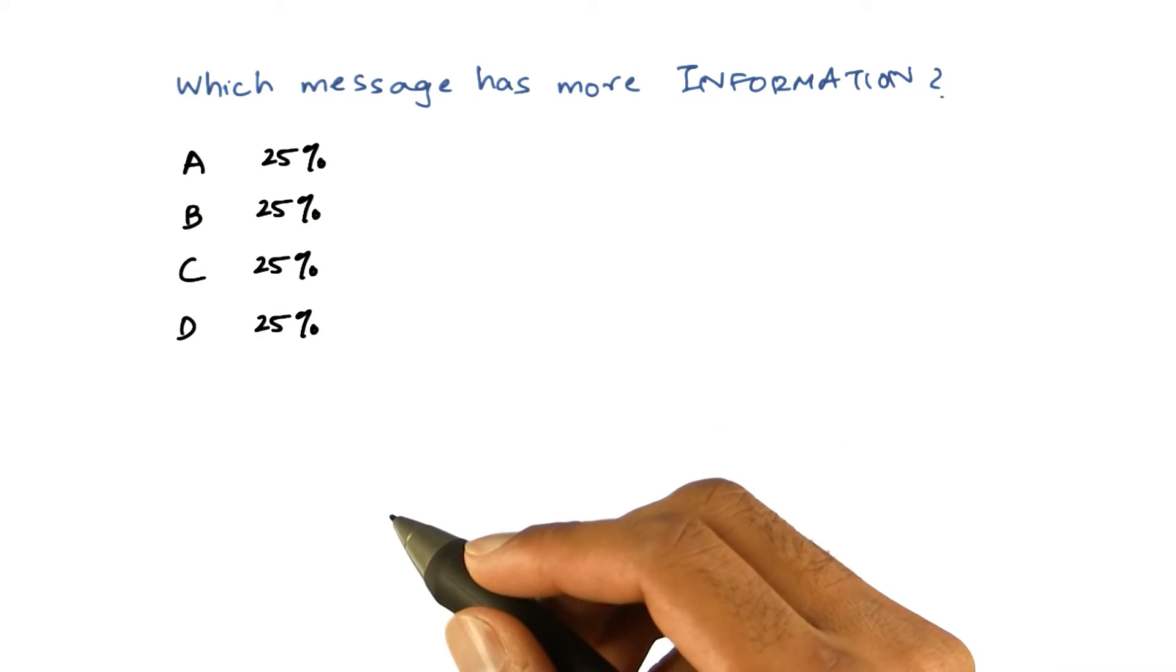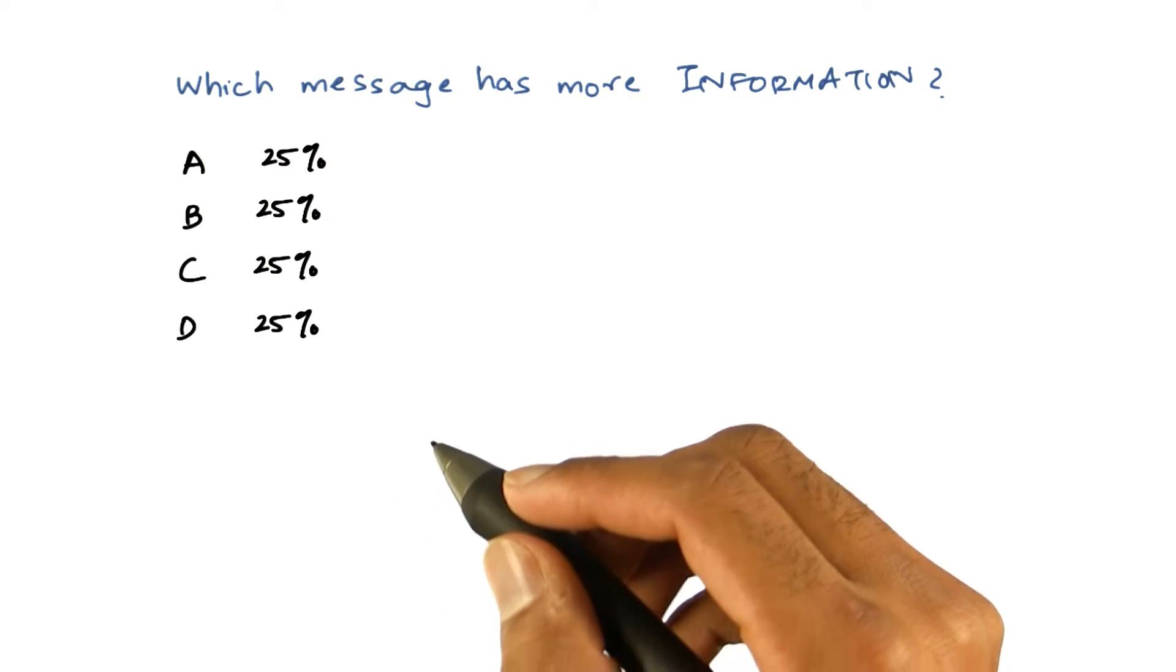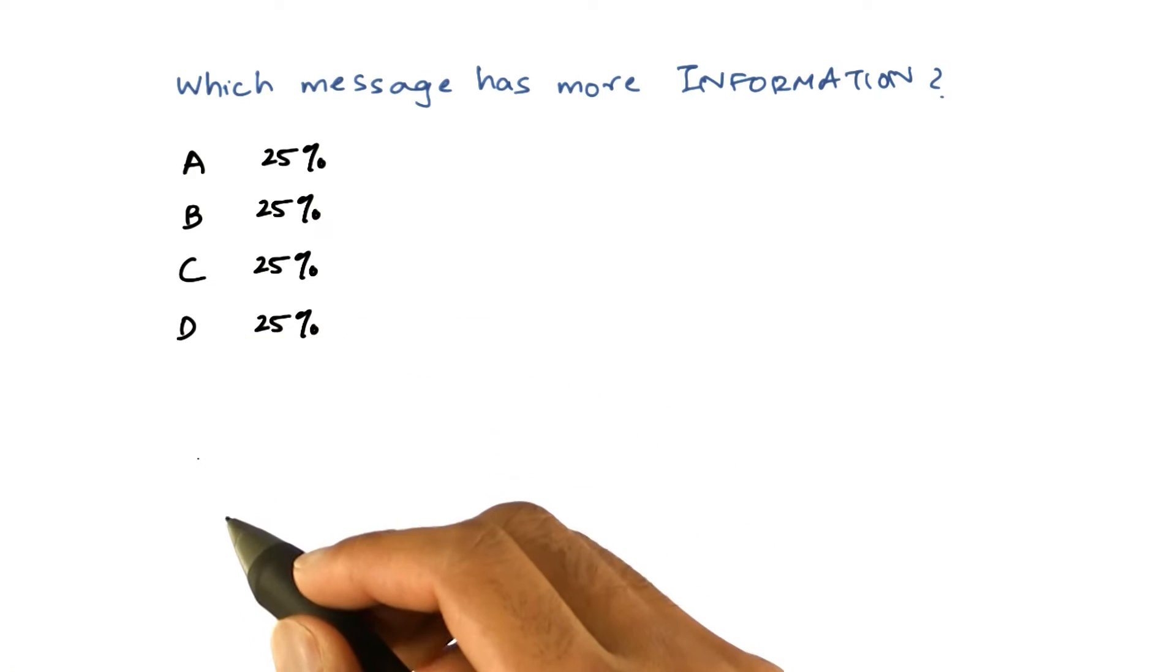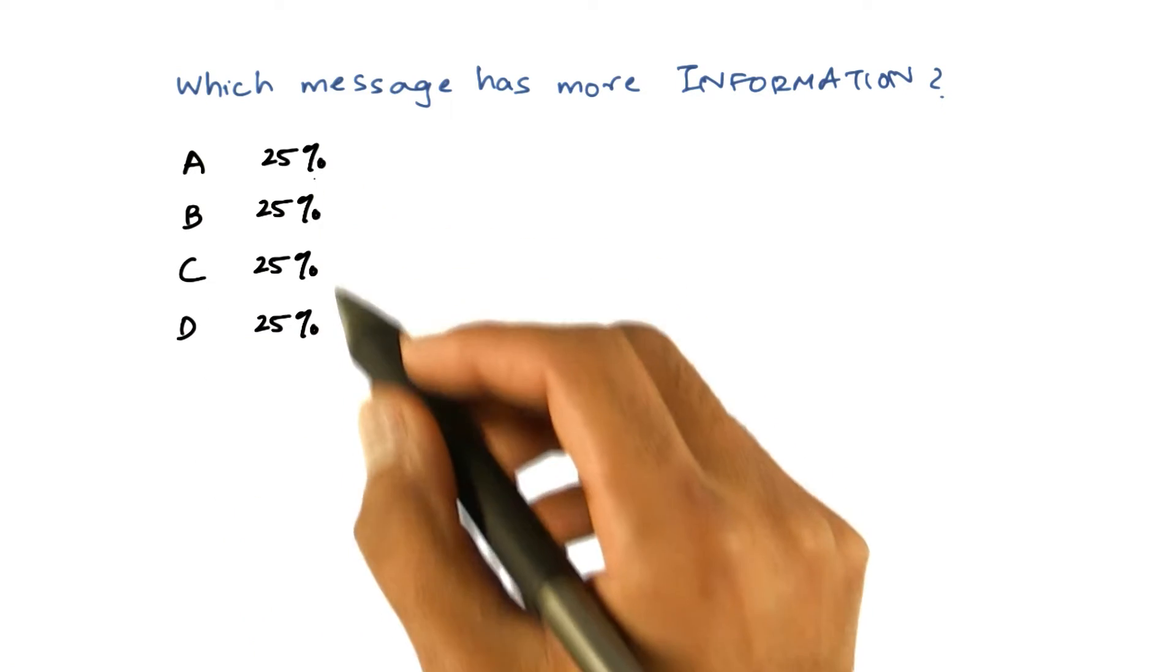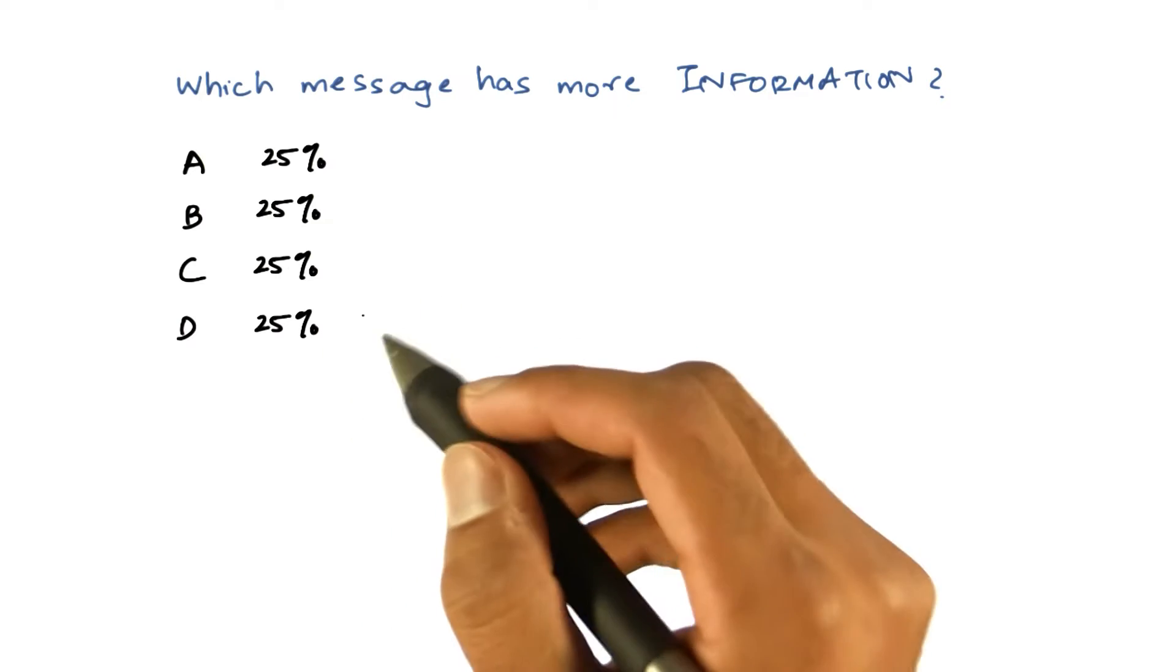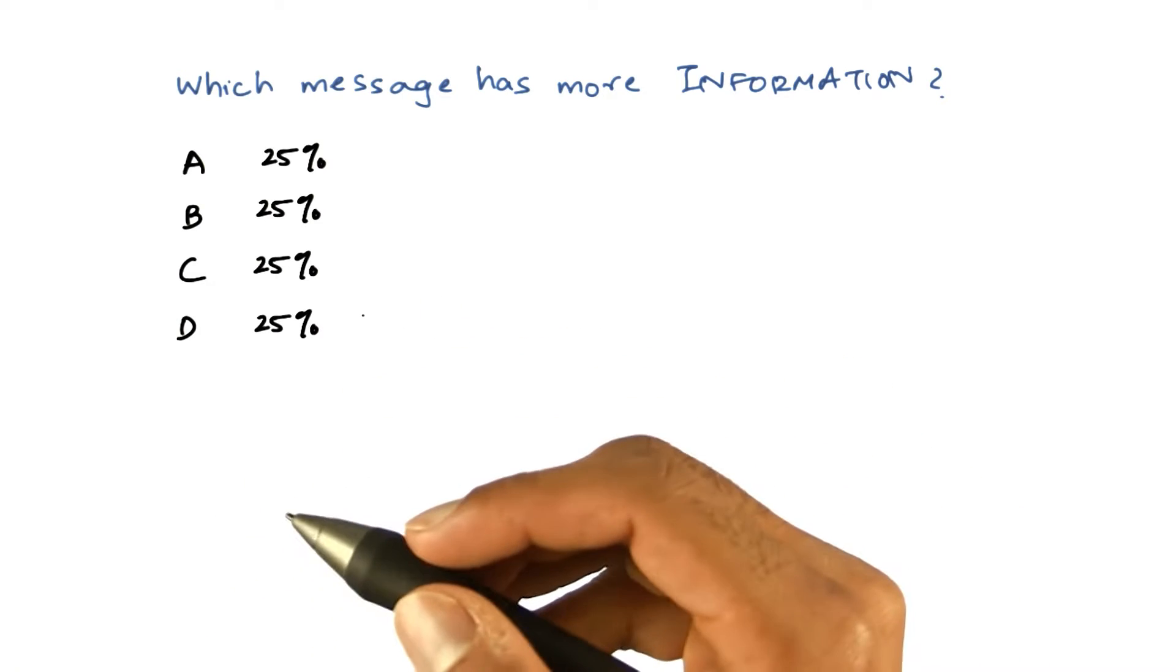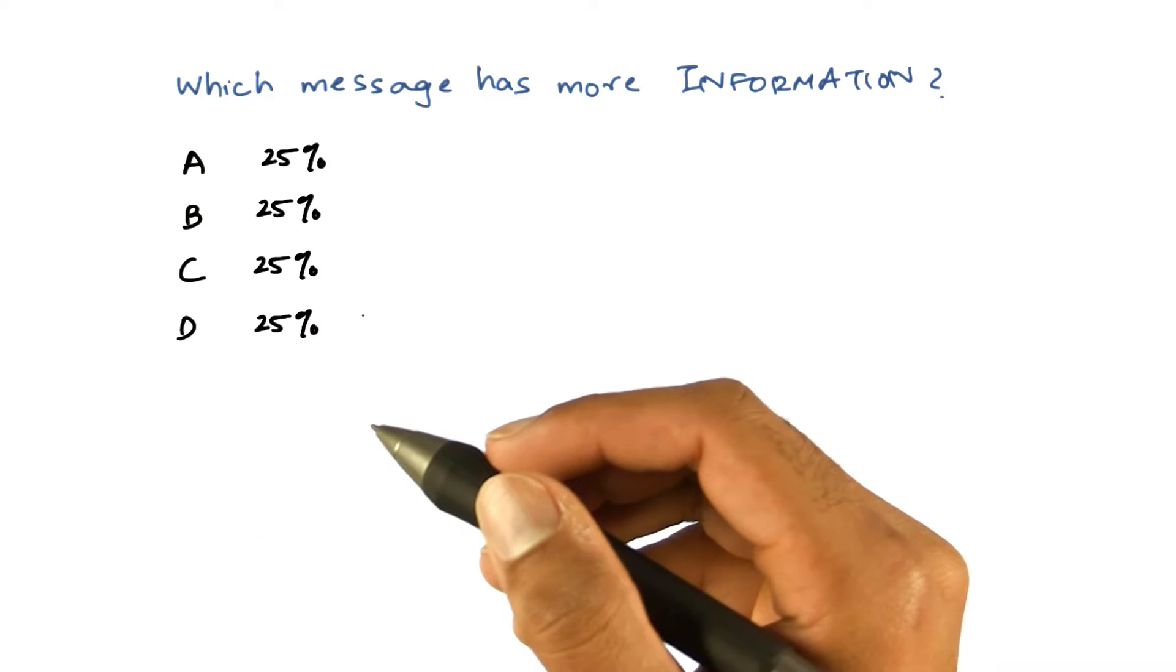Let's consider that we want to transmit a message which is made up of four words: A, B, C, and D. And let's assume that all four letters are used equally in the language. The frequency of each letter occurring in the language is equal.